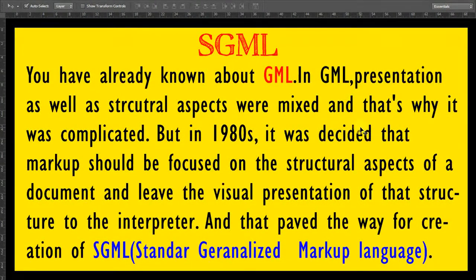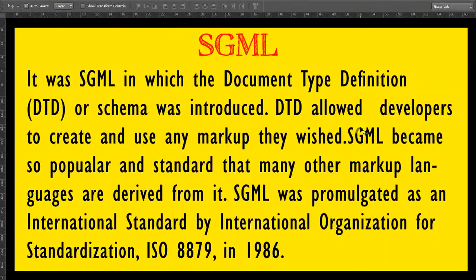In GML, the presentation as well as the structural aspects were mixed, and that's why it was complicated. But in the 1980s it was decided that markup should focus on structural aspects of a document and leave the visual presentation to the interpreter. That paved the way for the creation of SGML — Standard Generalized Markup Language. SGML introduced Document Type Definition, or DTD, which allowed developers to create and use any markup they wished. SGML became so popular that many other markup languages are derived from it, and it was promoted as an international standard by ISO 8879 in 1986.